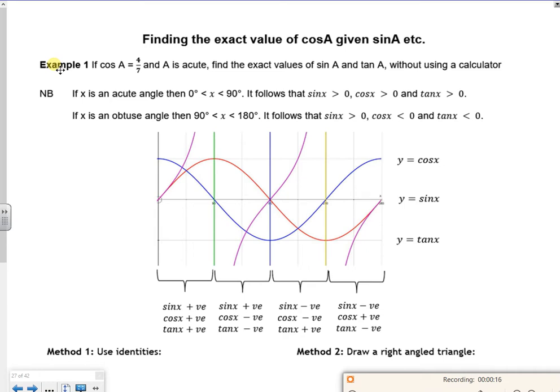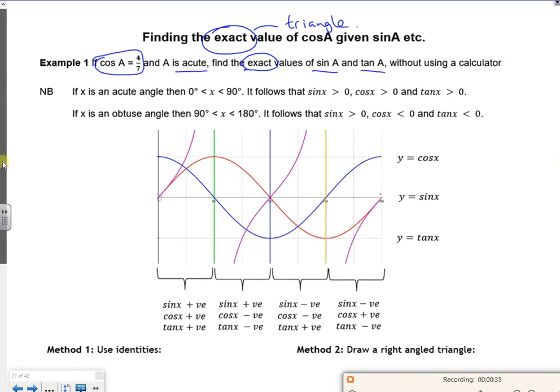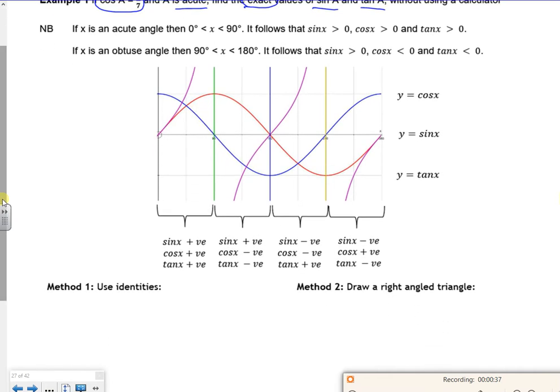Whenever I see exacts and it has to do with trig, I always think about drawing a triangle. There's another way, but I like the triangle. Let's have a look at the question. The question says cos A is 4 over 7, it's acute, and we want to find the exact values for sine and tan.